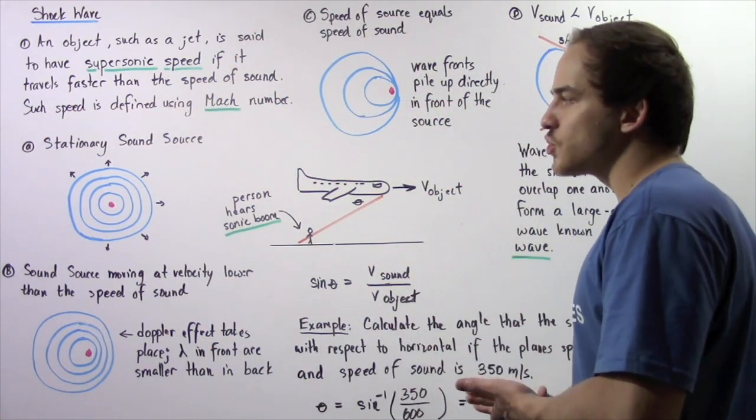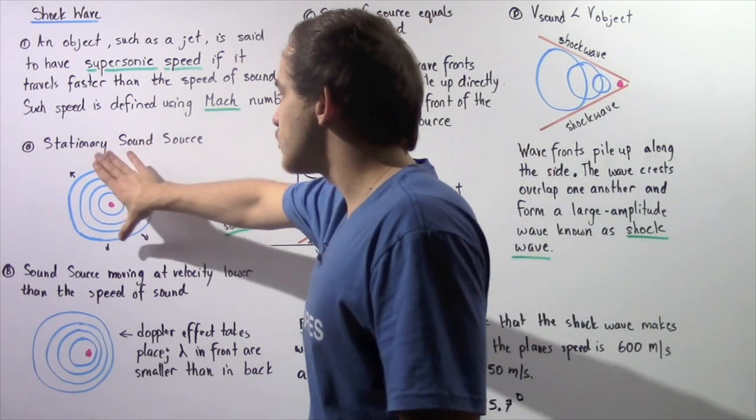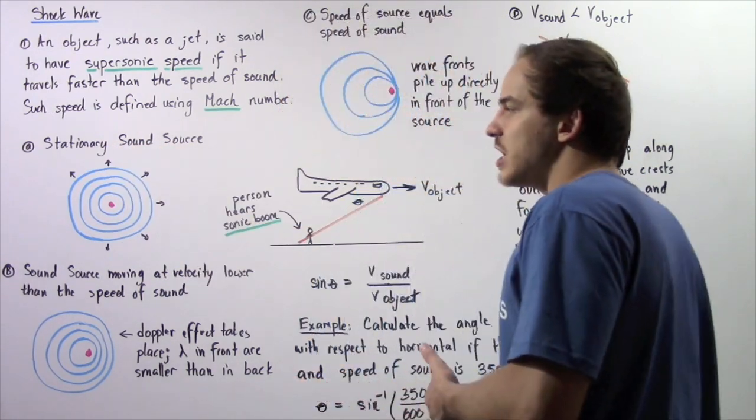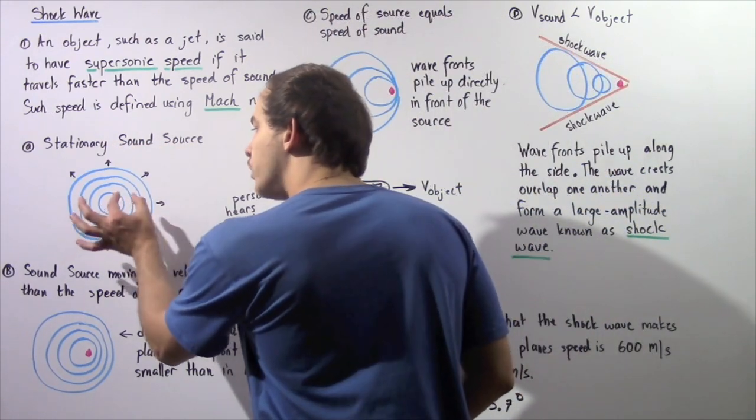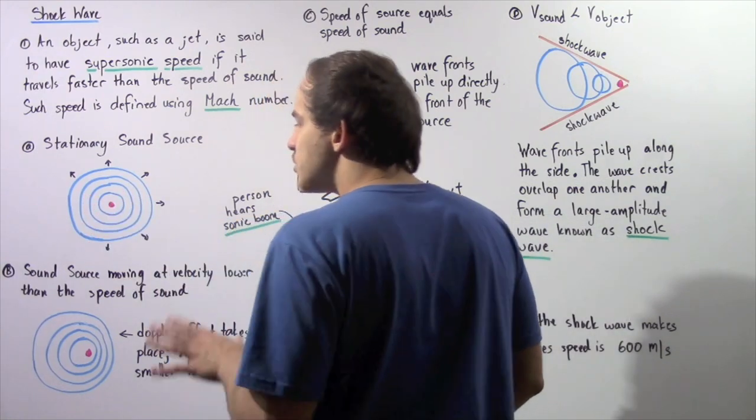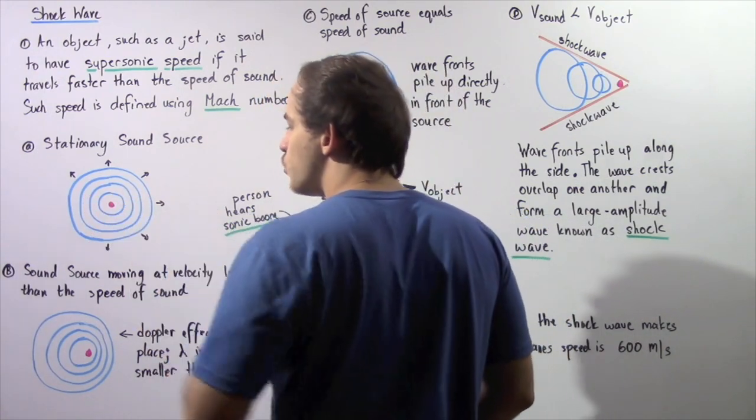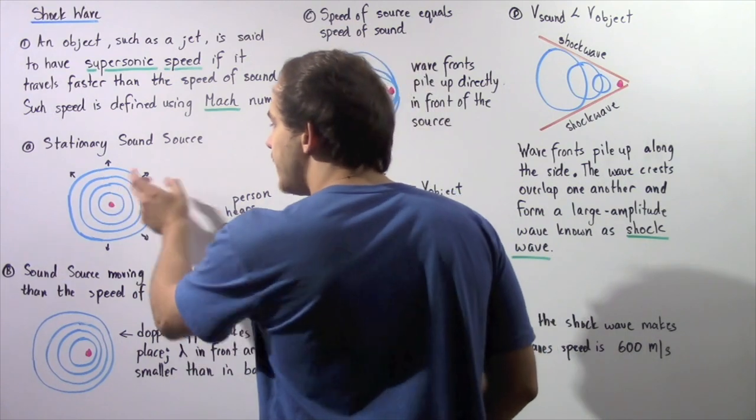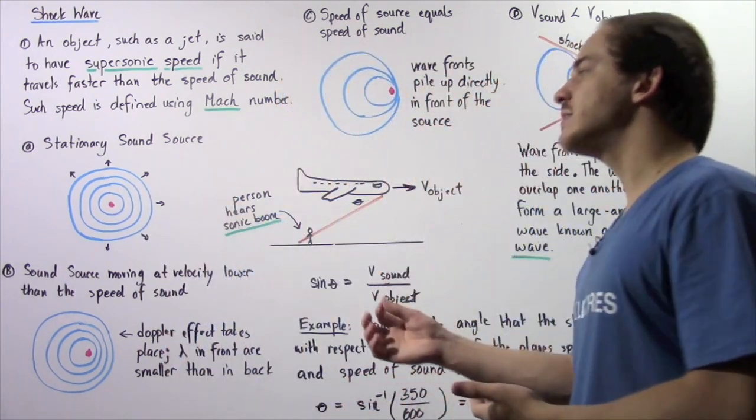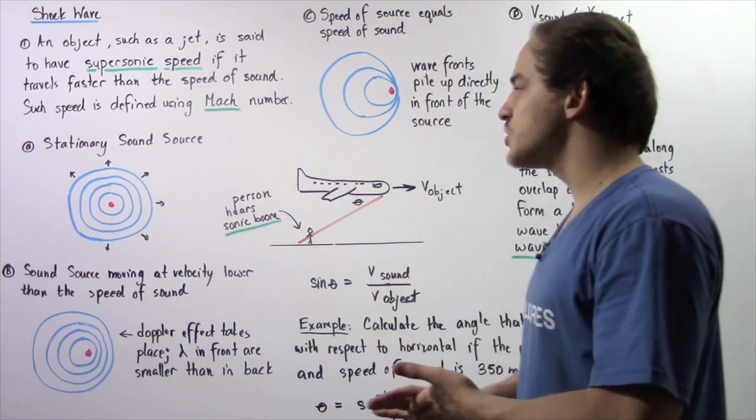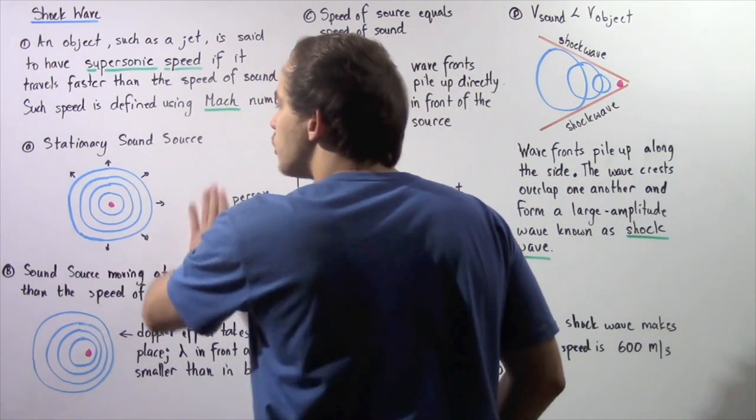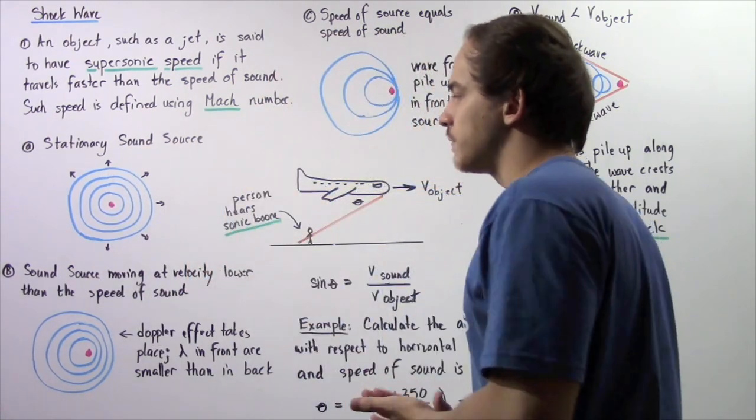along any perimeter of this sound wave that's created by the sound source. And the sound waves will look something like this, where it will have equally spaced wavelengths. So the distance between any two consecutive crests will be exactly the same.